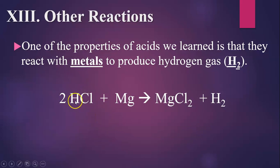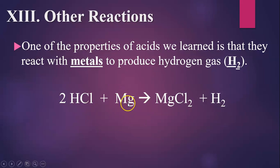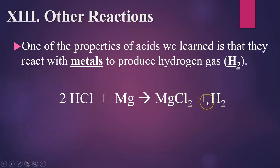One property of acids is that they react with metals to produce hydrogen gas. For example, mixing hydrochloric acid with magnesium — this is a single replacement reaction. Magnesium is higher on the activity series than hydrogen, so it kicks hydrogen out. You get hydrogen gas and a resulting salt, magnesium chloride. Acids plus metals produce hydrogen gas plus a salt.